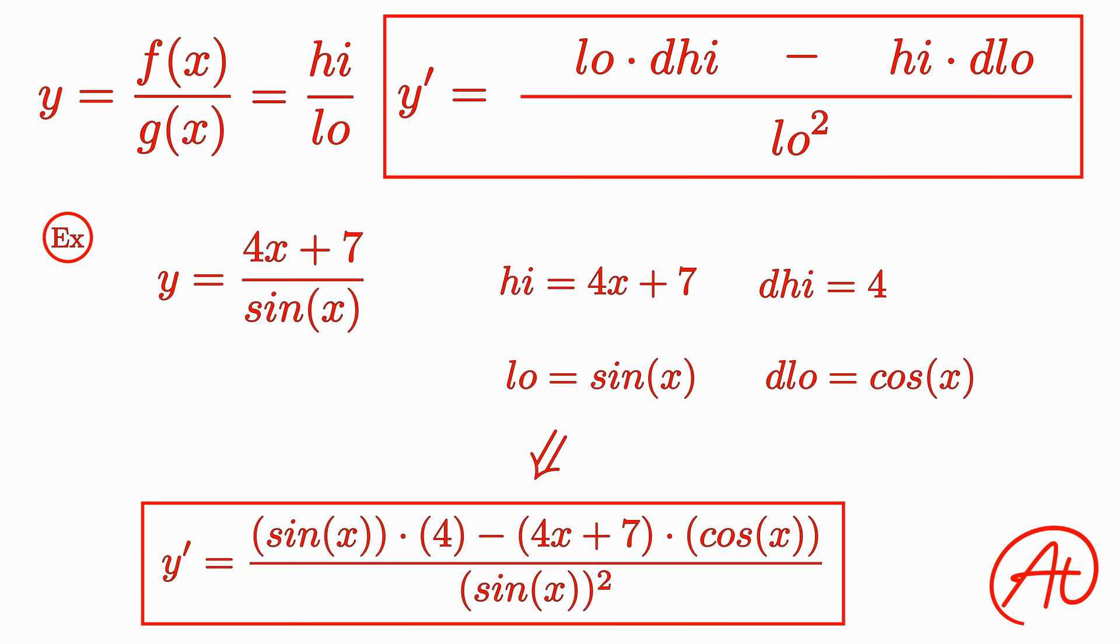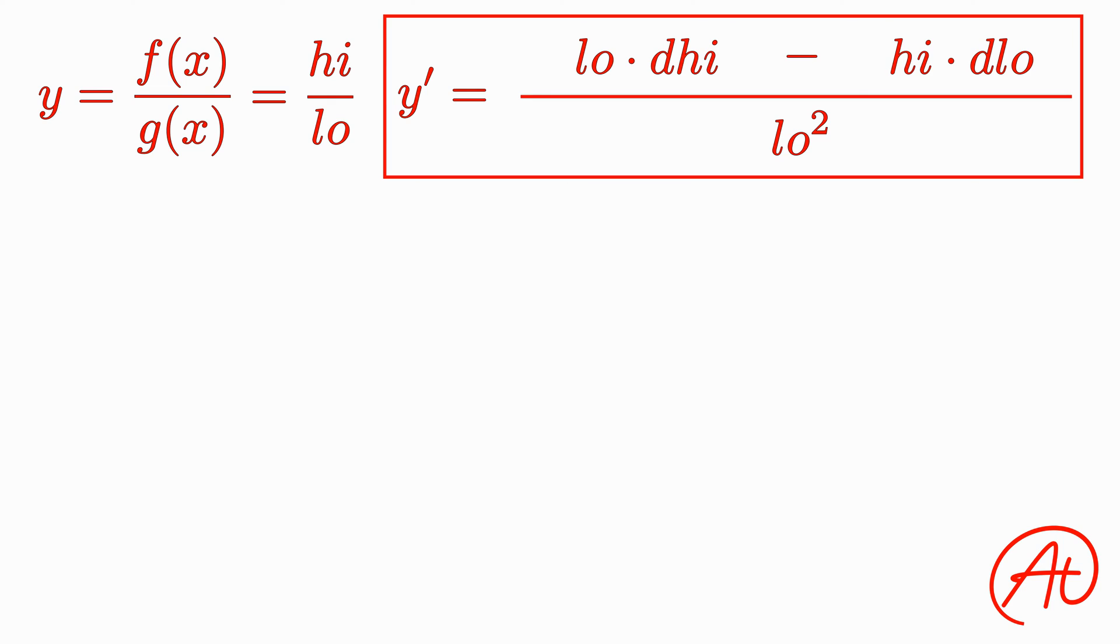With a little more practice, you'll have the Quotient Rule mastered in no time. Just remember, low d high minus high d low, all over low squared.